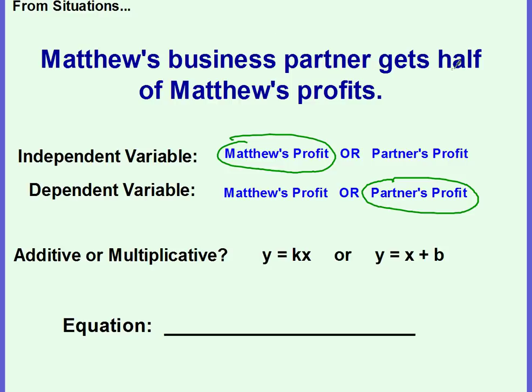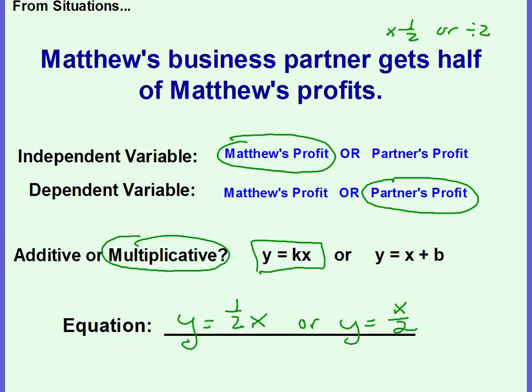And it says that he gets half. Well, that's the same as multiplying by half or dividing by two. So this is going to be multiplicative, which means we're going to use this equation format right there. So Y, the dependent variable, which is the partner's profit, is going to equal half of X, half of Matthew's profit. Or you could write it as Y is going to equal Matthew's profit divided by two.